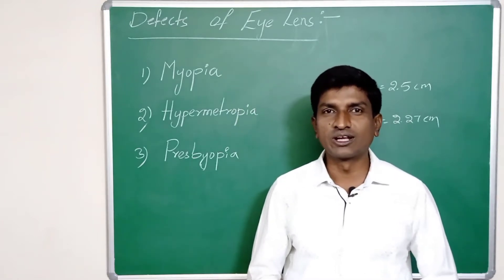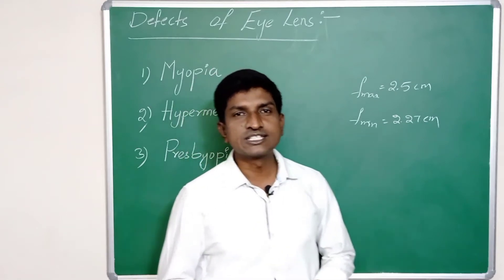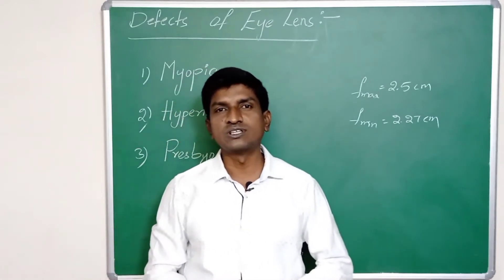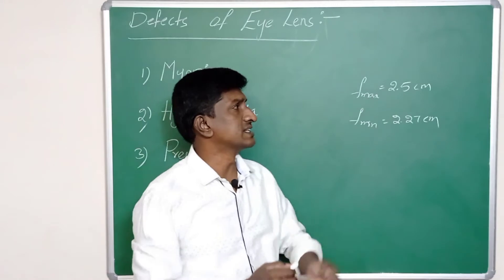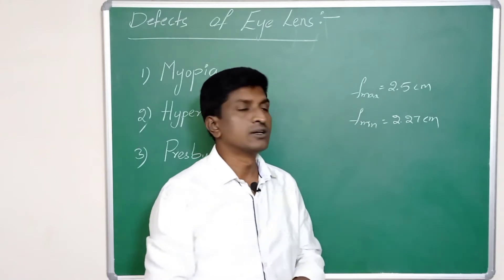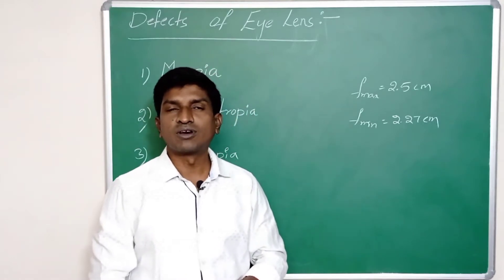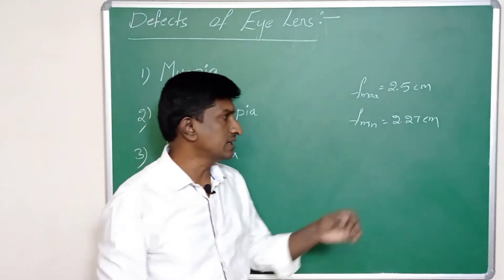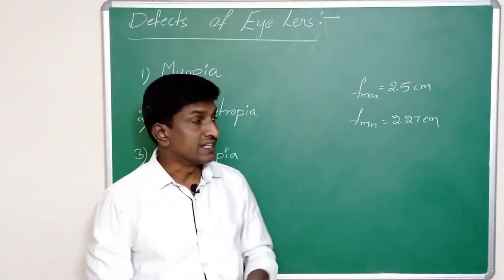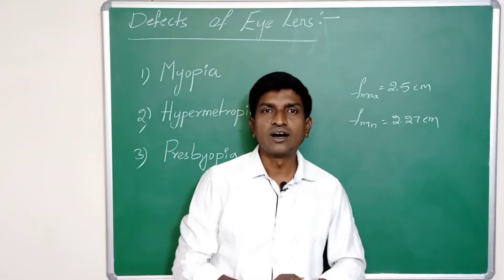Welcome to Physics Learning Point. In this video we will discuss the defects of the eye lens. In the previous class we discussed that the maximum focal length of the lens is 2.5 centimeters and the minimum focal length is 2.27 centimeters. With the help of ciliary muscles, the lens changes its focal length from maximum to minimum and minimum to maximum. This change of focal length is called accommodation of the lens.